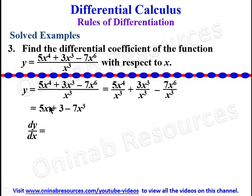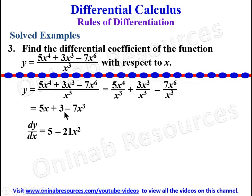To find dy/dx: this is x raised to power 1 times 5 — reducing the power by 1, x is gone, giving derivative of 5x as 5. The derivative of the constant 3 is 0, so we ignore it. Then negative 7 times 3 gives negative 21, reducing the power by 1 gives minus 21x^2. So dy/dx = 5 − 21x^2. That is the end of problem 3 and this tutorial.